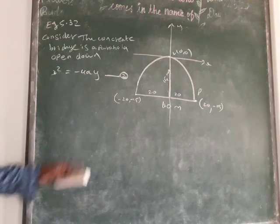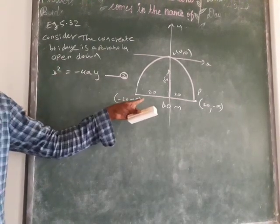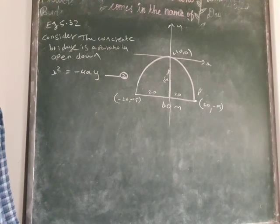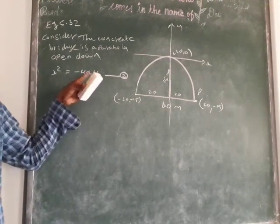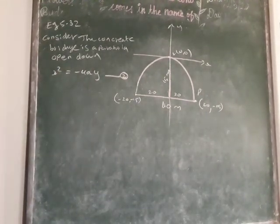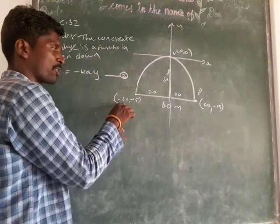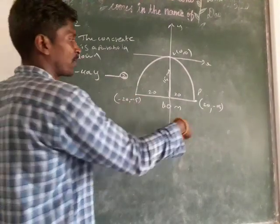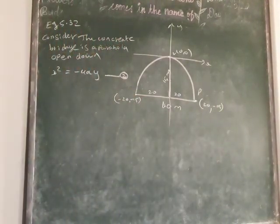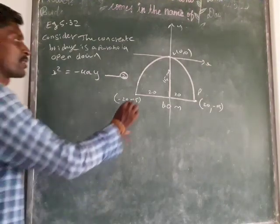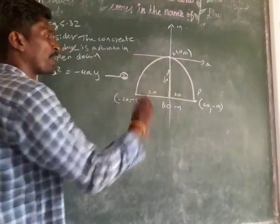So they ask to find what is the equation of the bridge, the parabola bridge. That means you want to find the value of a. So the bridge passes through the point. You can take (-20, -15). Otherwise you take (20, -15). So both are same. Both also pass through the parabola only. So any one point you take.